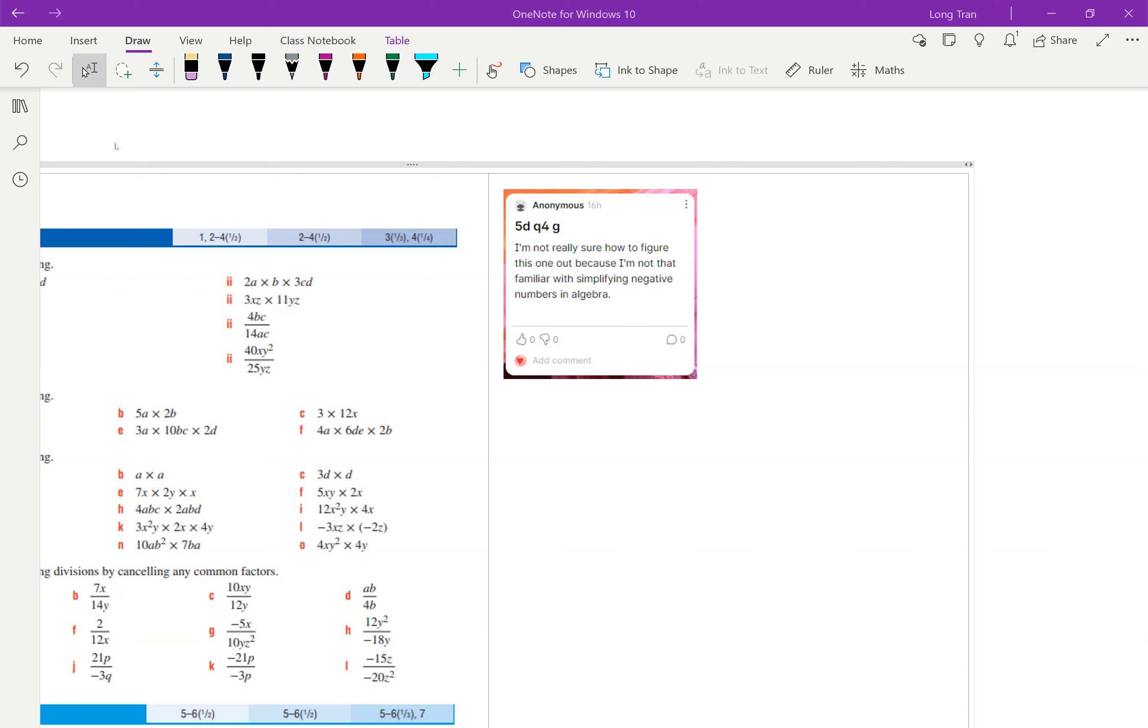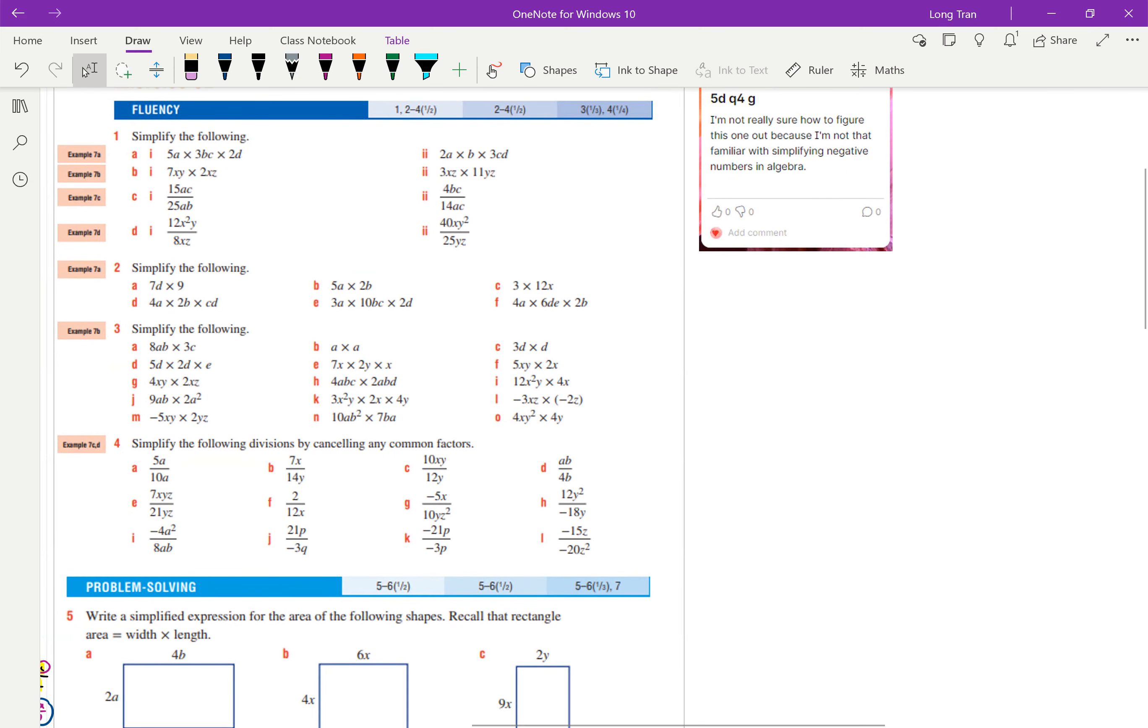Hi there, I can see that there's a question for 5d, question 4g. Let's have a see, what's 4g. So question 4, and we're looking at g.